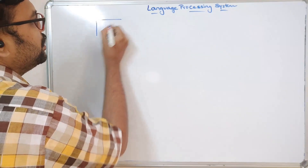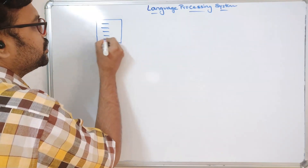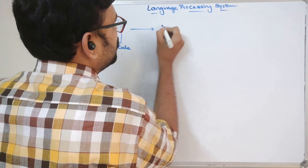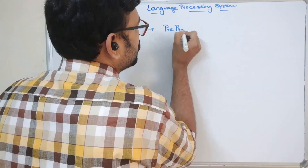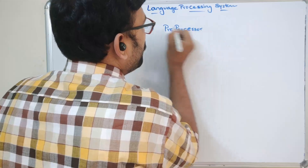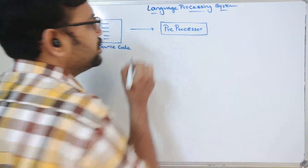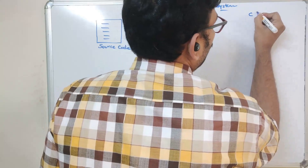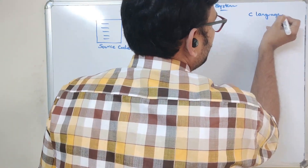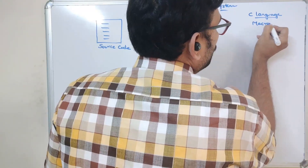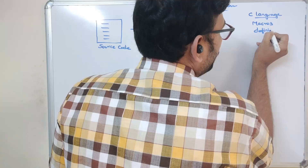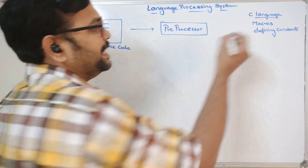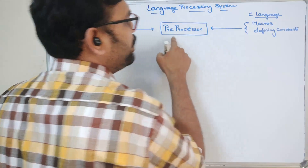First, the input will be the source code — that means the instructions written in the high level language. This source code will be given to the preprocessor. In any language, there will be some instructions that can be executed prior to the code being given to the compiler. For example, in C language, there are instructions like macros or defining a constant. These instructions must be executed before giving the code to the compiler, and these processes will be executed by the preprocessor.